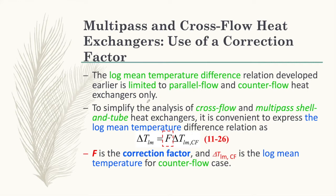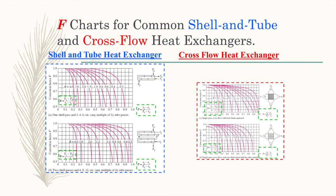To calculate the rate of heat transfer for both multi-pass and cross flow heat exchangers, you have to include the correction factor F. You can find this correction factor by referring to the chart for common shell-and-tube and cross flow heat exchangers. To use this chart, you must first calculate the values P and R.